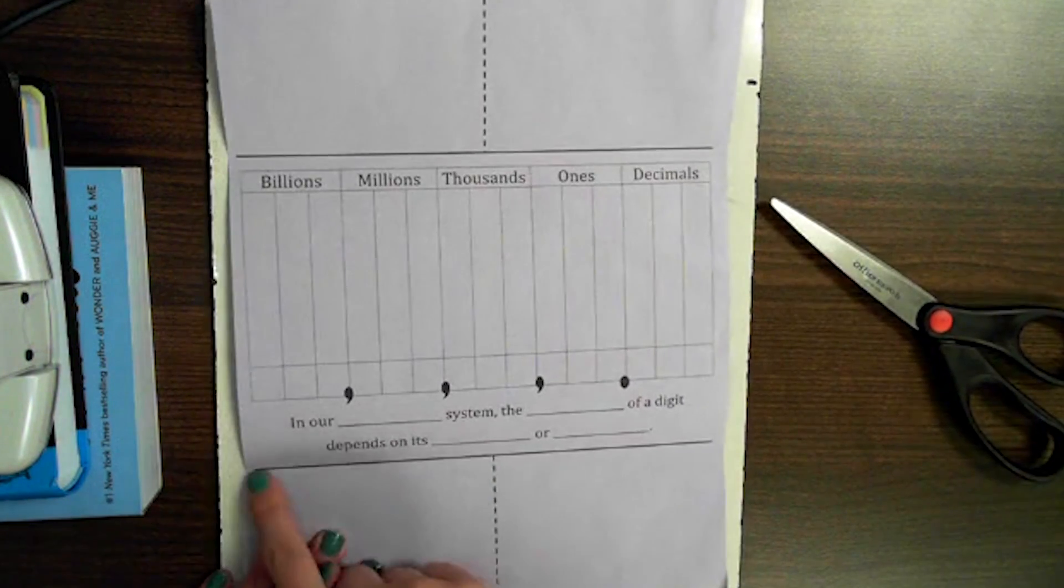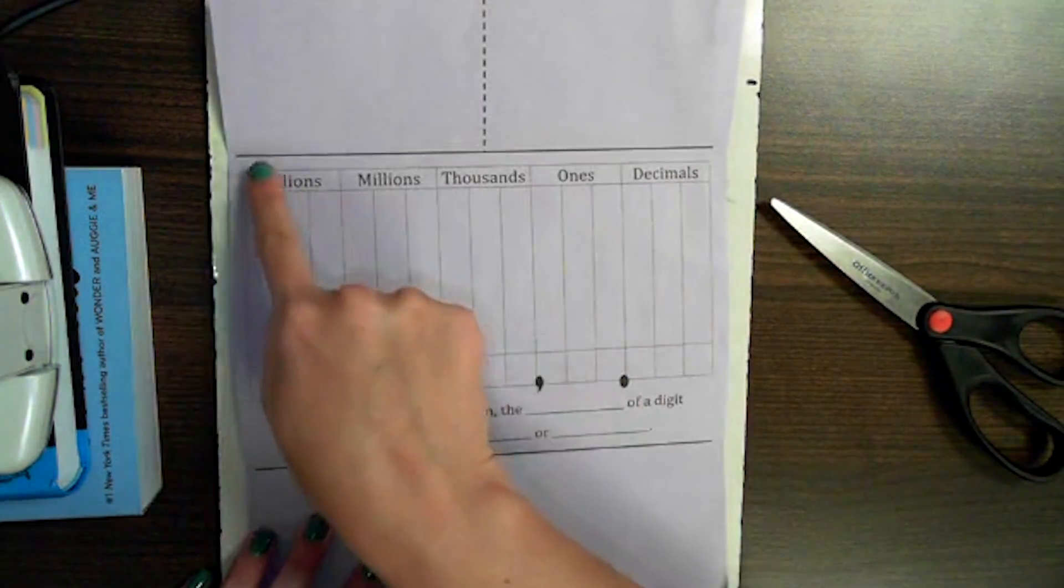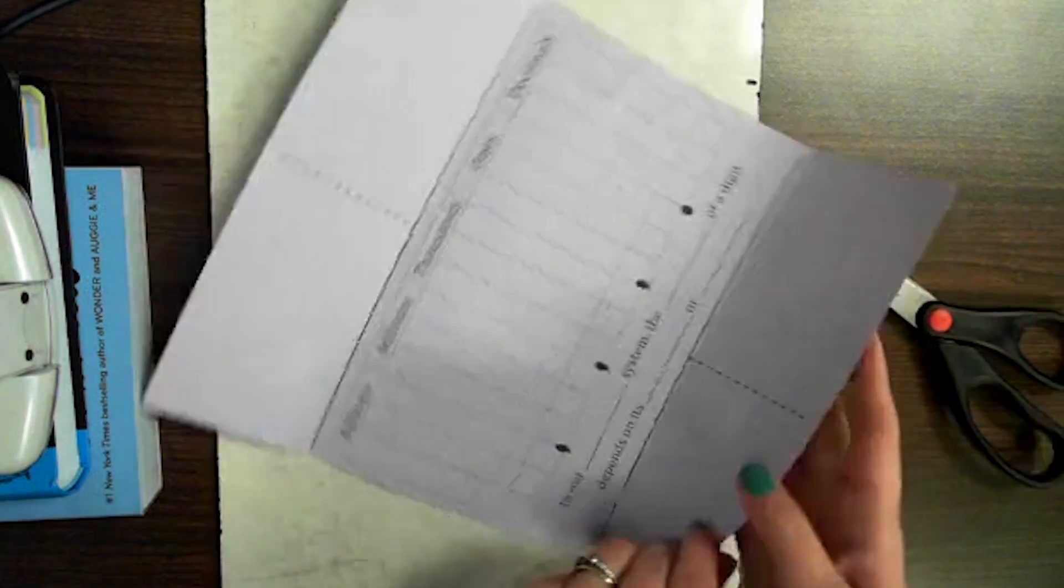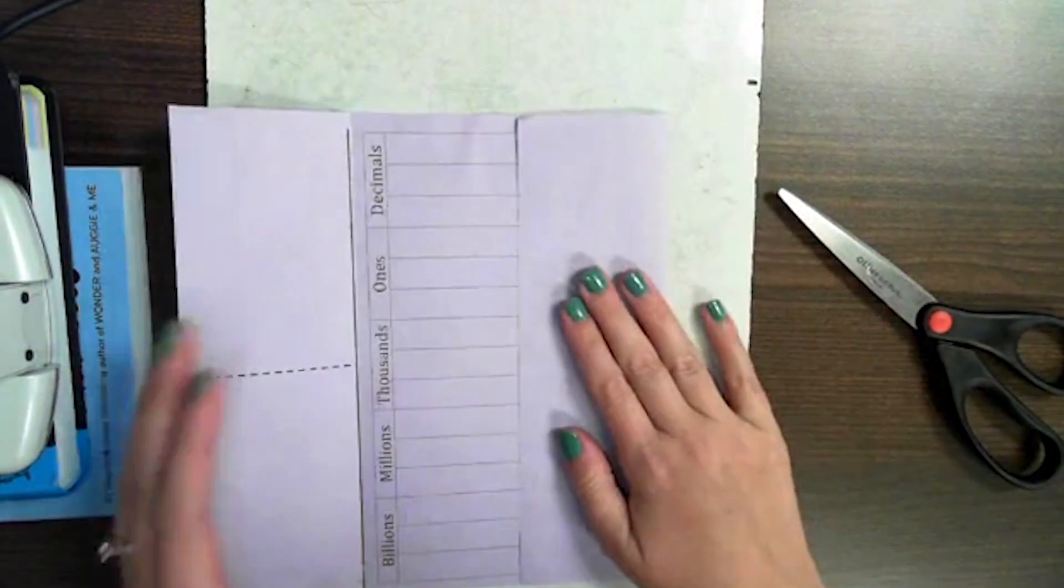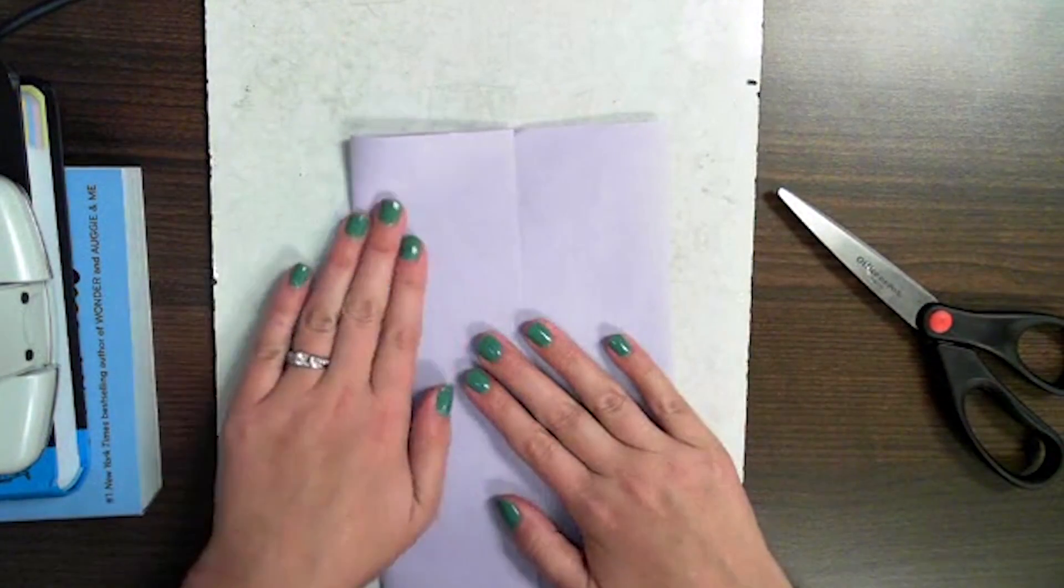You're going to take your foldable and fold on the solid, bolded line. Just like this. You're going to make one fold here, and then another fold here.